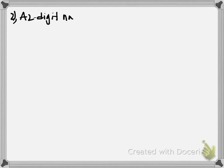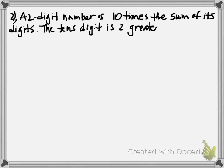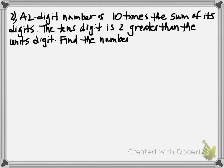Next problem: a two-digit number is 10 times the sum of its digits. The tens digit is 2 greater than the units digit. Find the number.